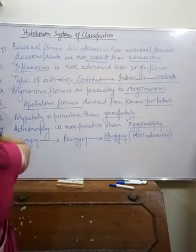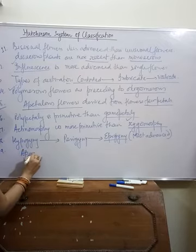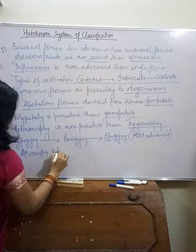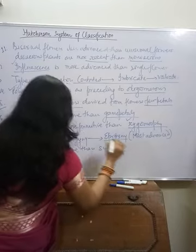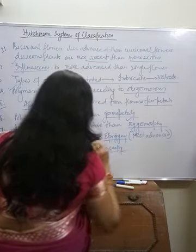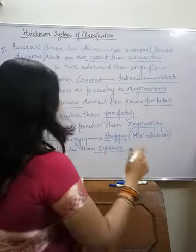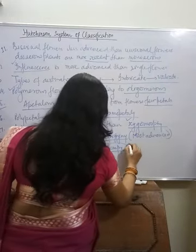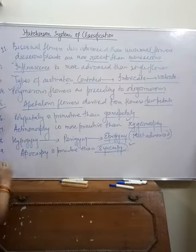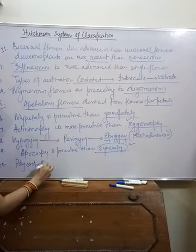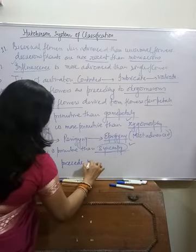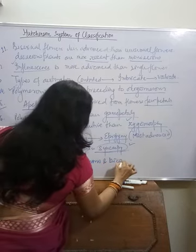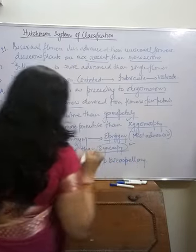The nineteenth principle is apocarpy is primitive compared to syncarpy. When carpels are fused, it is called the syncarpous condition, and according to Hutchinson, syncarpous condition is more advanced. The twentieth principle is polycarpellary condition precedes monocarpellary or bicarpellary condition.